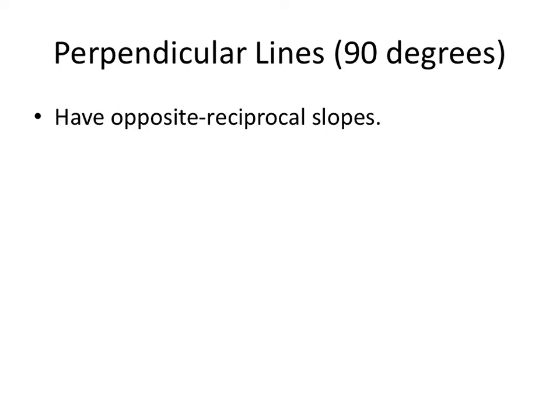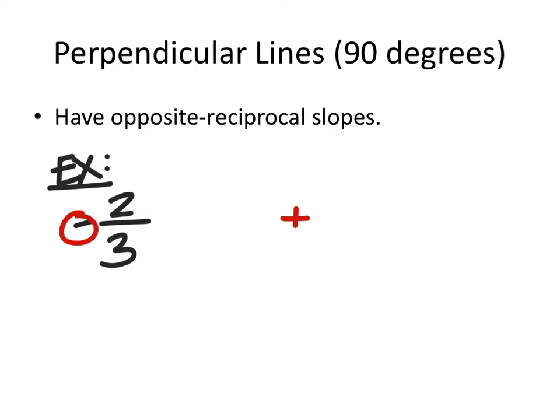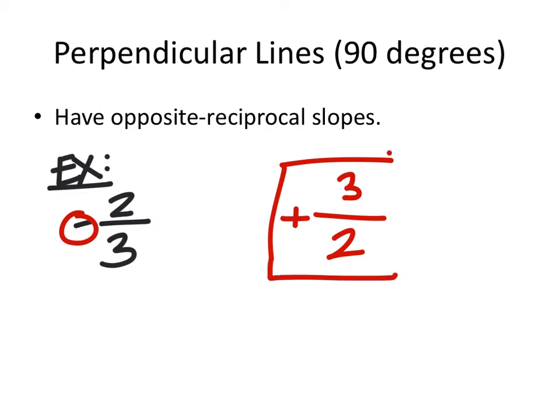Perpendicular lines at 90 degrees have opposite reciprocal slopes. For example, if the slope was negative two-thirds and I wanted the opposite reciprocal slope, the opposite would be positive — because this one's negative — and then we flip the fraction. The slope of a line perpendicular at 90 degrees would be three-halves.